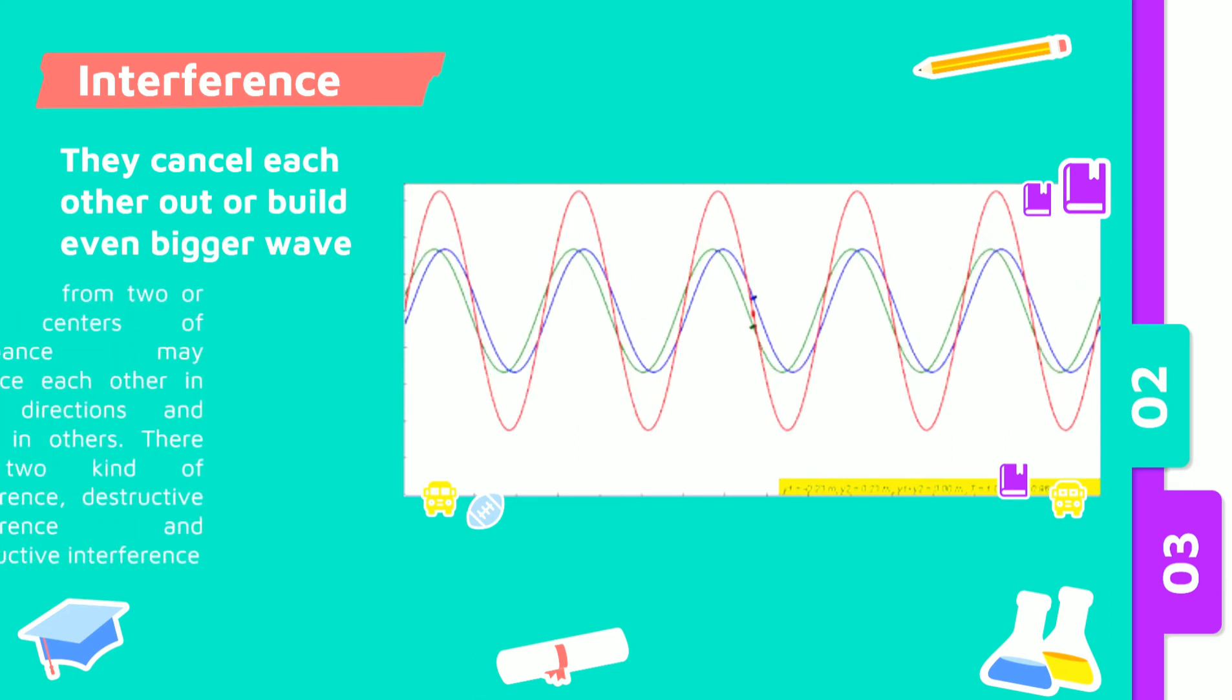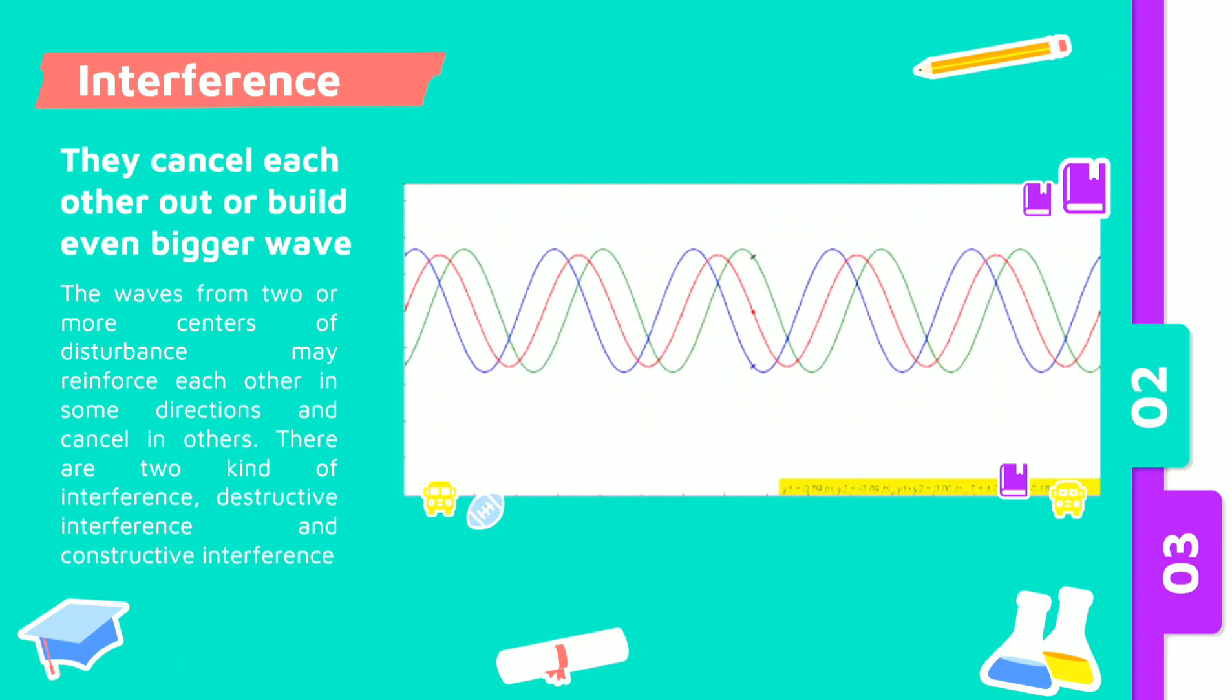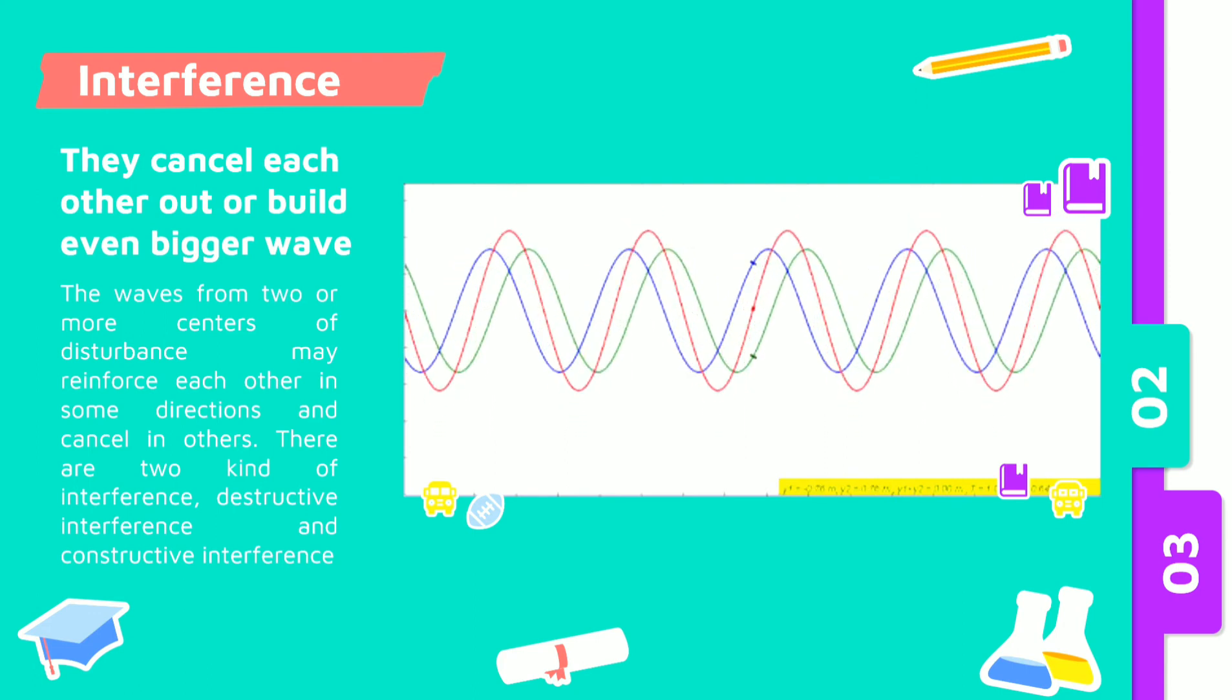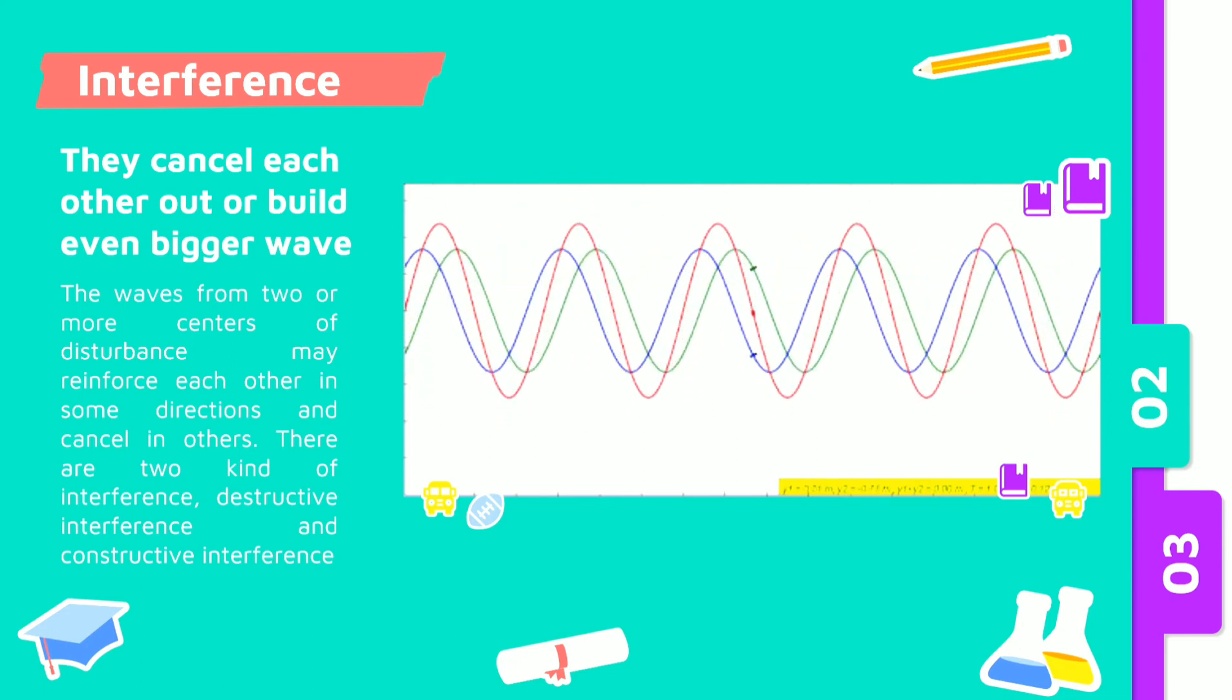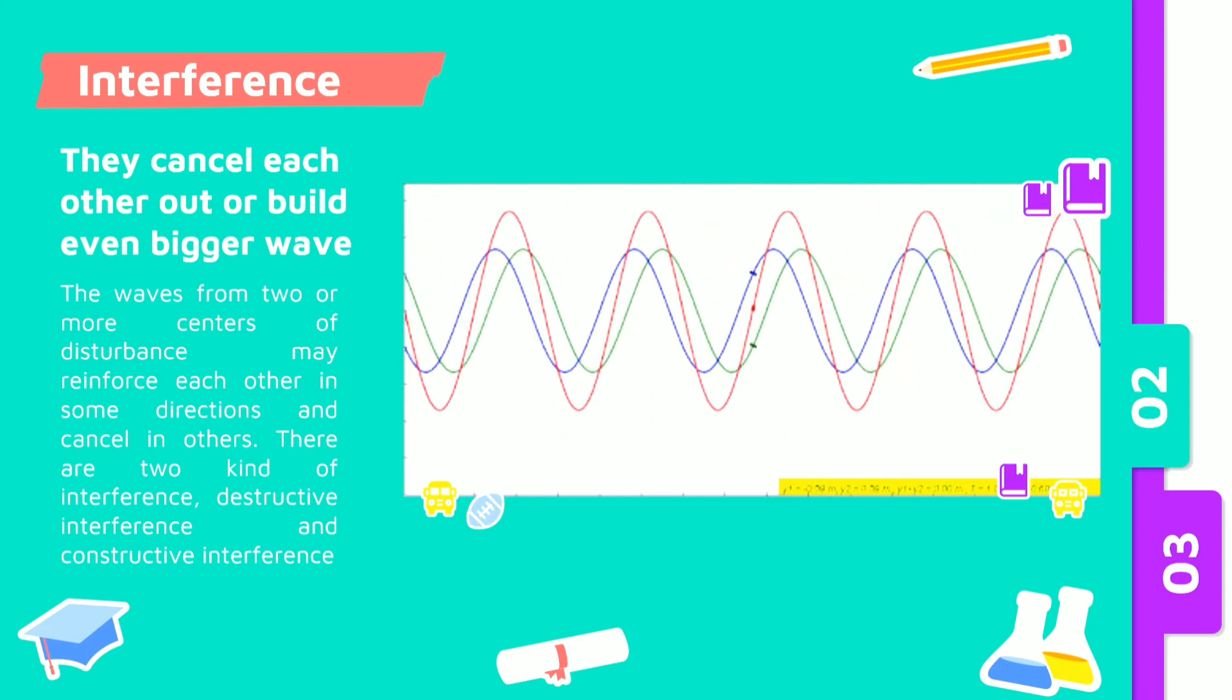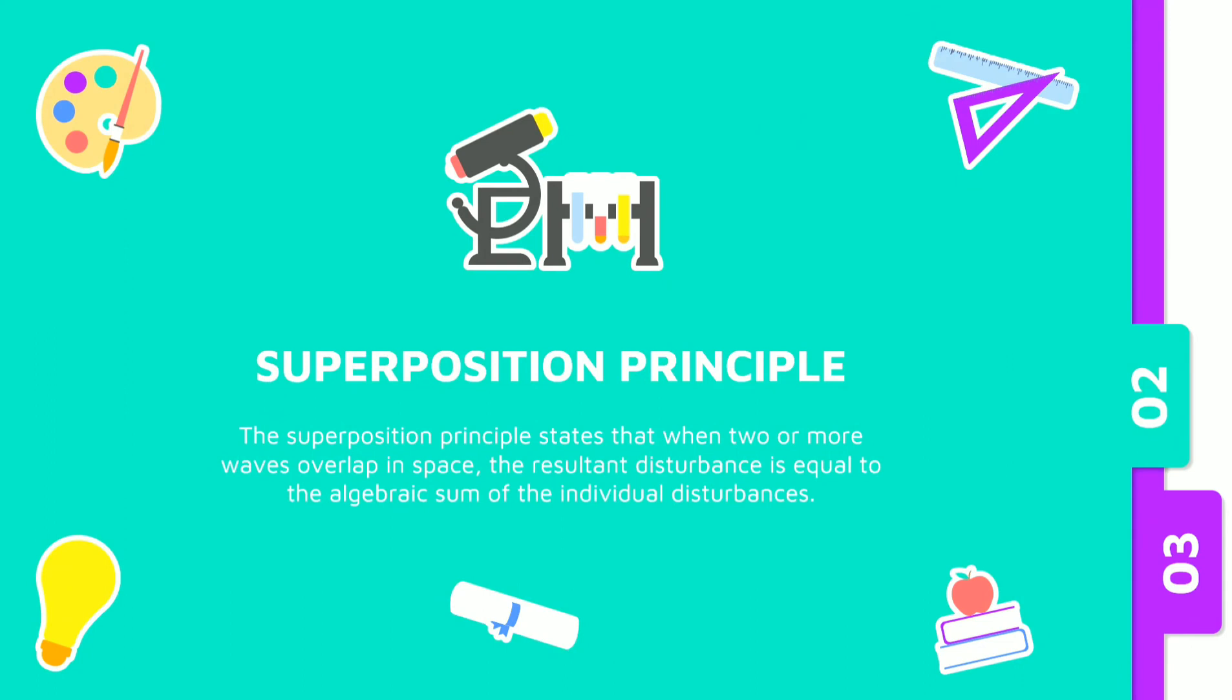Interference. The waves from two or more centers of disturbance may reinforce each other in some directions and cancel each other. For example, we have a medium and then there are two incoming waves. When they meet, they will produce a combined wave. This phenomenon is called interference of waves. There are two types of interference: destructive interference and constructive interference. But first, we have to know about the superposition principle. The superposition principle states that when two or more waves overlap in space, the resultant disturbance is equal to the algebraic sum of the individual disturbances.